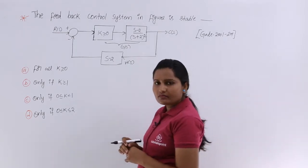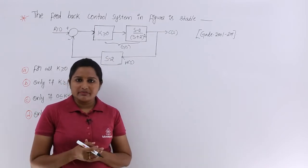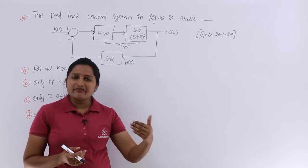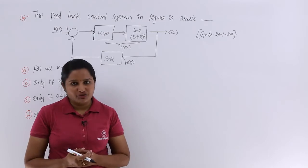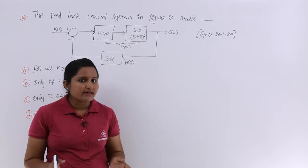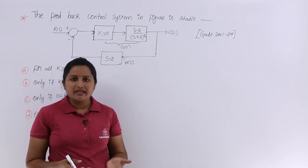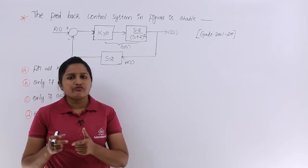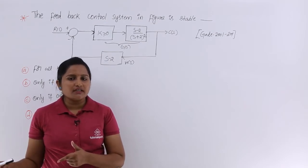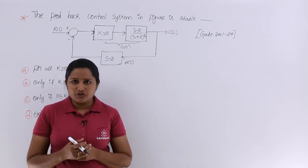Whenever you have a problem related to stability analysis, examining the Routh array is the best way. To write the Routh array we definitely require the characteristic equation of the system. Here they have given only the block diagram and not the characteristic equation, so from the block diagram we need to determine the transfer function, then get the characteristic equation, then write the Routh array to get the conditions for stability.